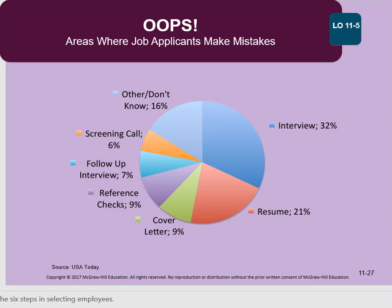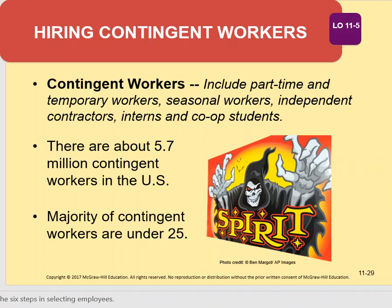The first step in the selection process was to complete an application — and this is where job applicants oftentimes make mistakes. Oftentimes employers don't want to hire people on a full-time basis, but rather hire contingent workers. Contingent workers include part-time workers, temporary workers, seasonal workers, independent contractors, interns, and student co-ops.